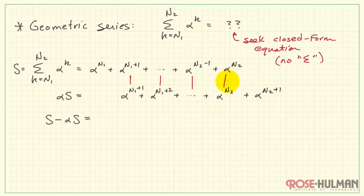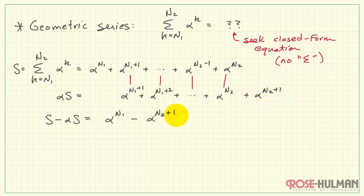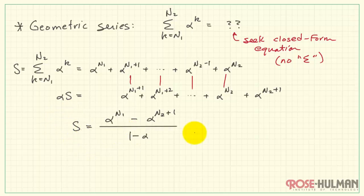The only terms that are not the same are the two endpoints. Therefore, S minus alpha S equals alpha raised to n1, minus alpha raised to n2 plus 1. Next, I'll note that capital S is common to both terms on the left. Taking 1 minus alpha and dividing underneath gives us our closed-form equation.